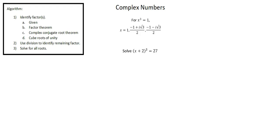Our problem reads, solve quantity x plus 2 to the power of 3 equals 27. At the top of the screen, I've added the cube roots of unity. For the equation x to the power of 3 equals 1, the three solutions are 1, negative 1 plus i root 3 over 2, and negative 1 minus i root 3 over 2.